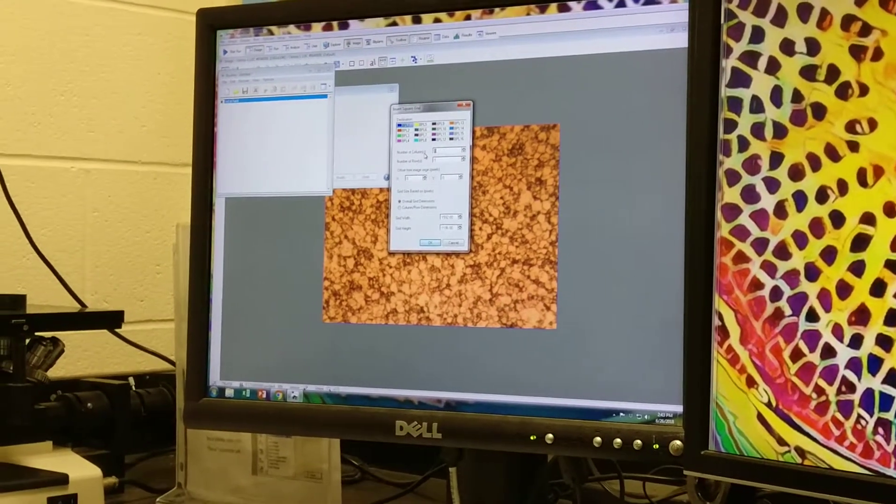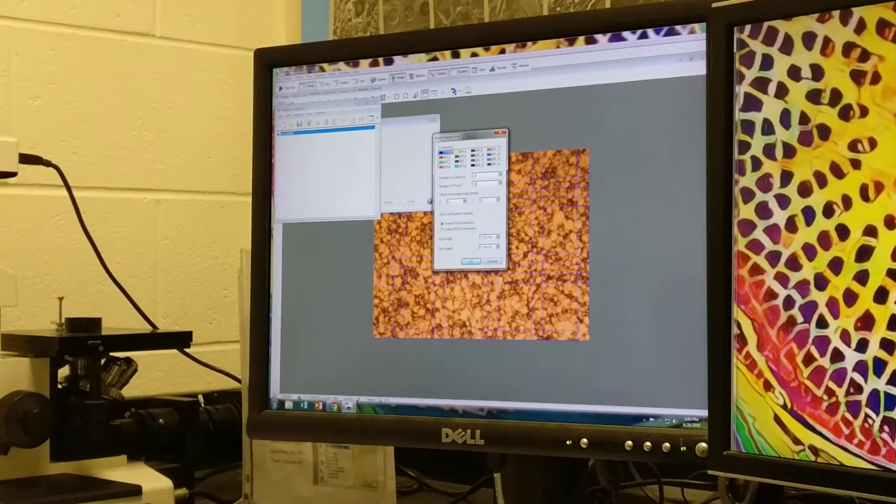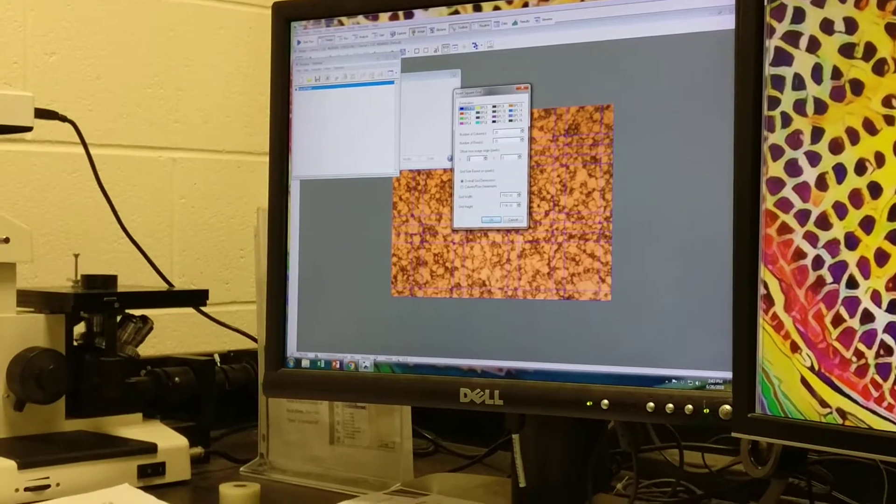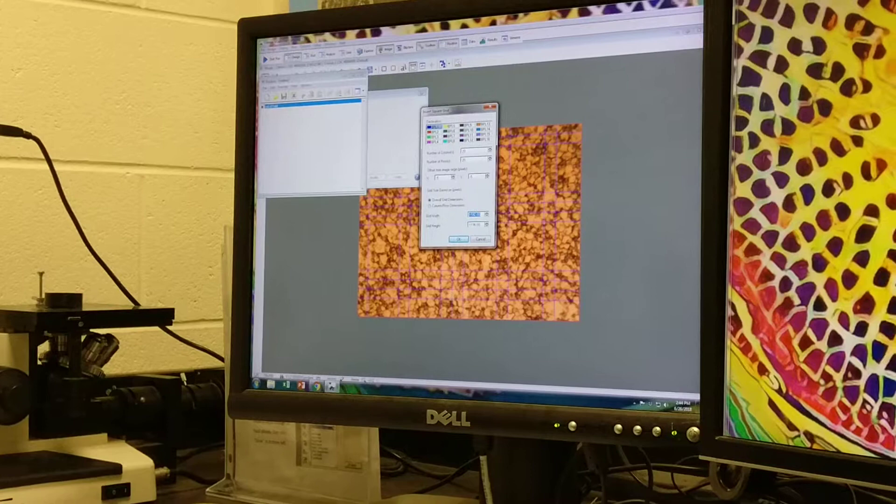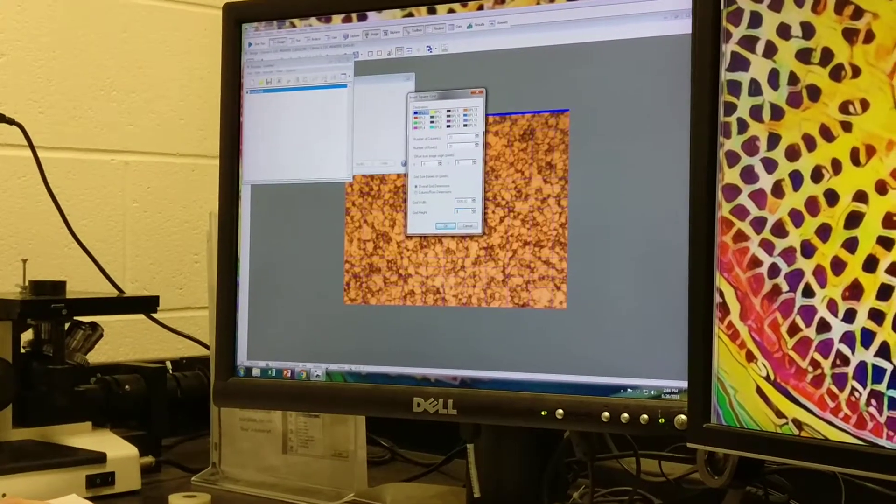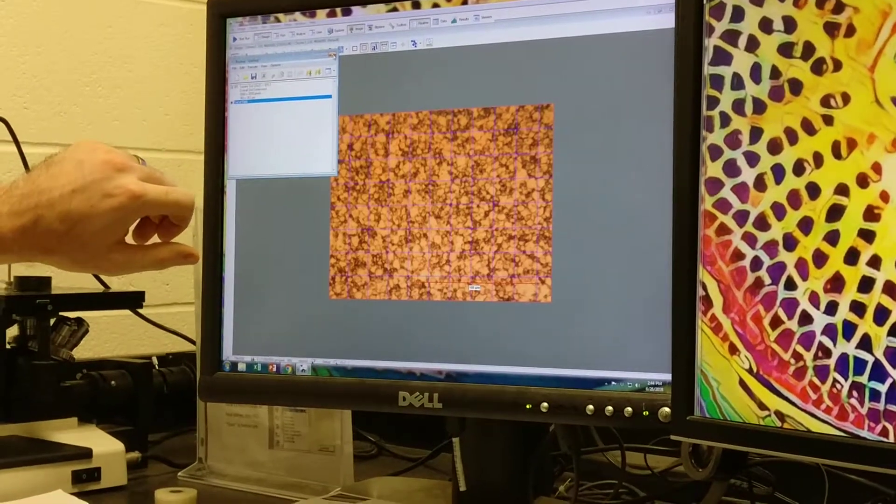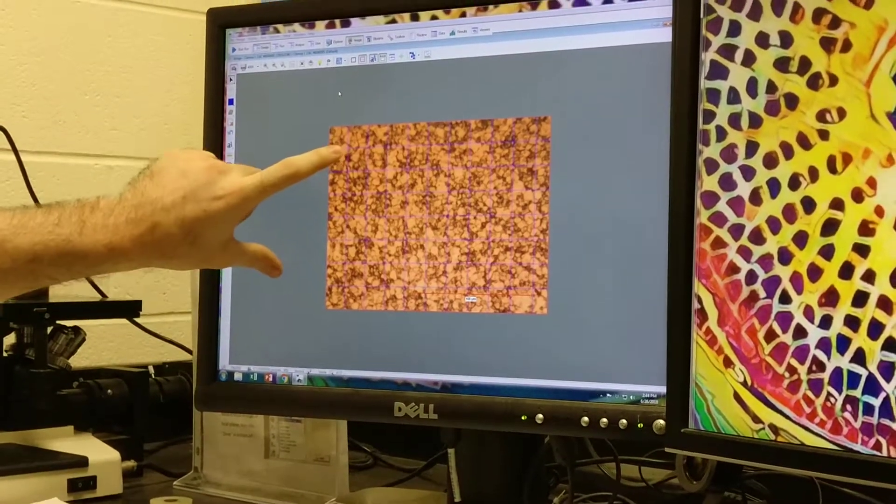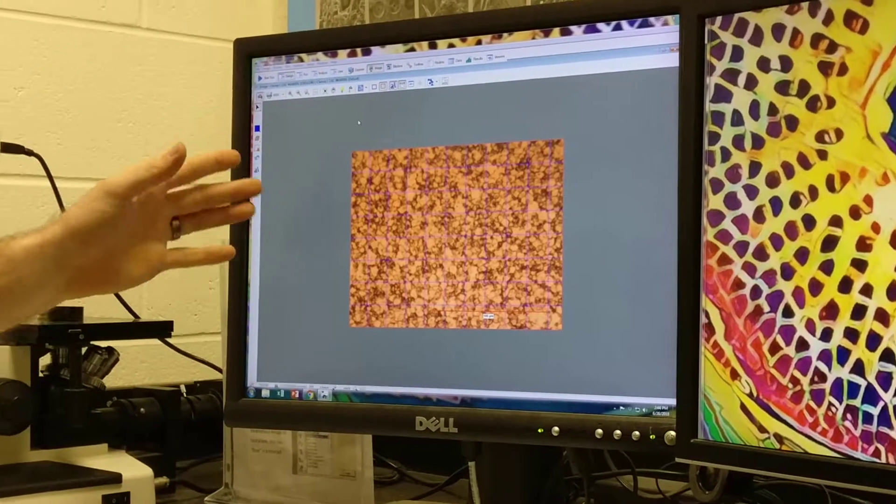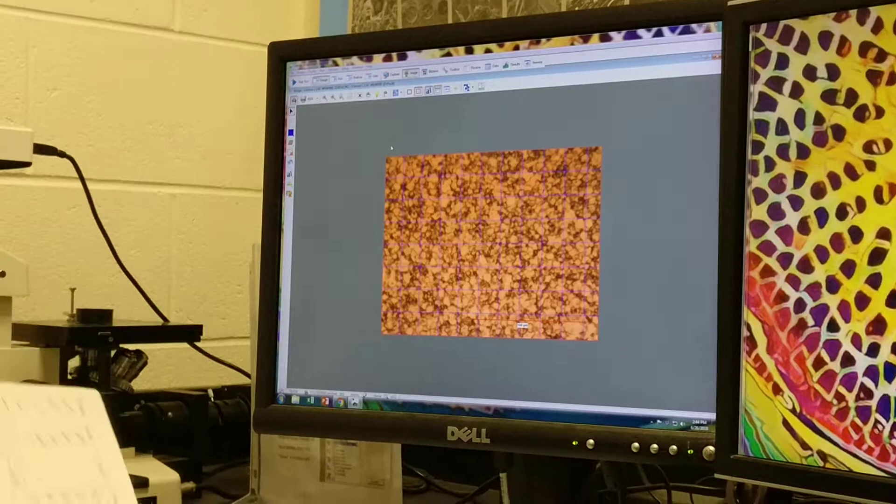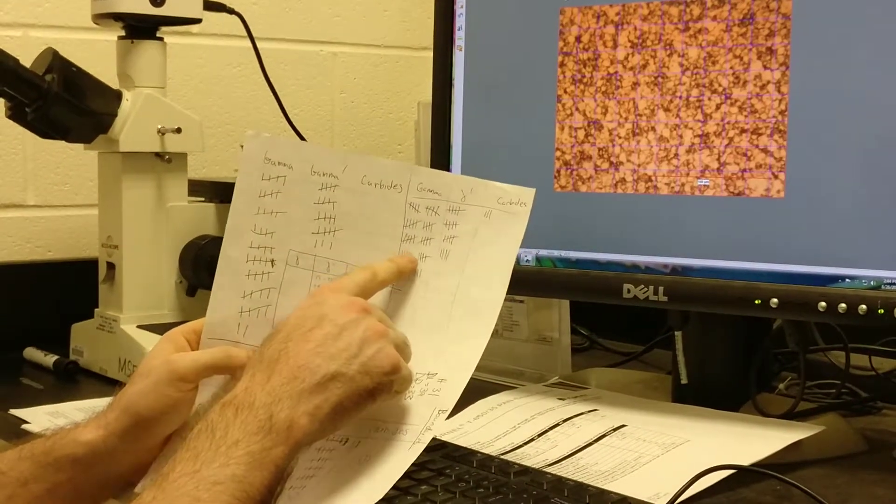Then we're going to put numbers in these boxes. Those numbers are 20 rows, 20 columns, the offset for x is negative 5, offset for y is negative 5, the grid width is 3000, the grid height is 3000. This is going to give us a total of 72 points intersections that we can see.